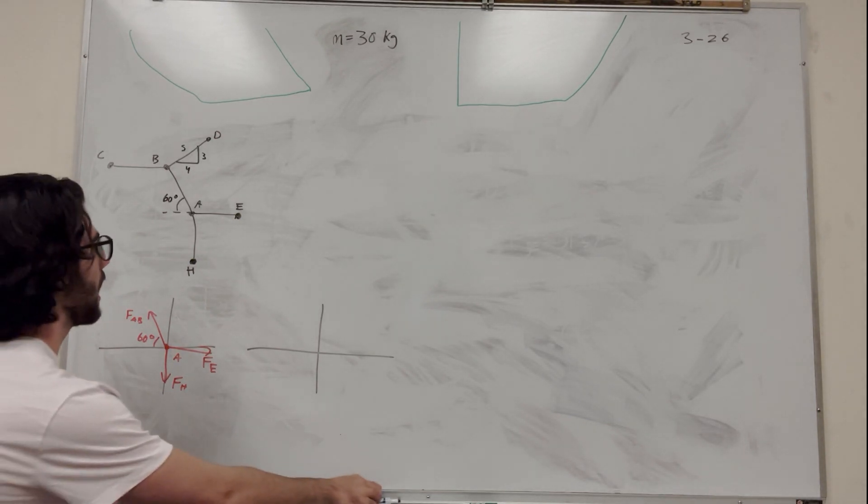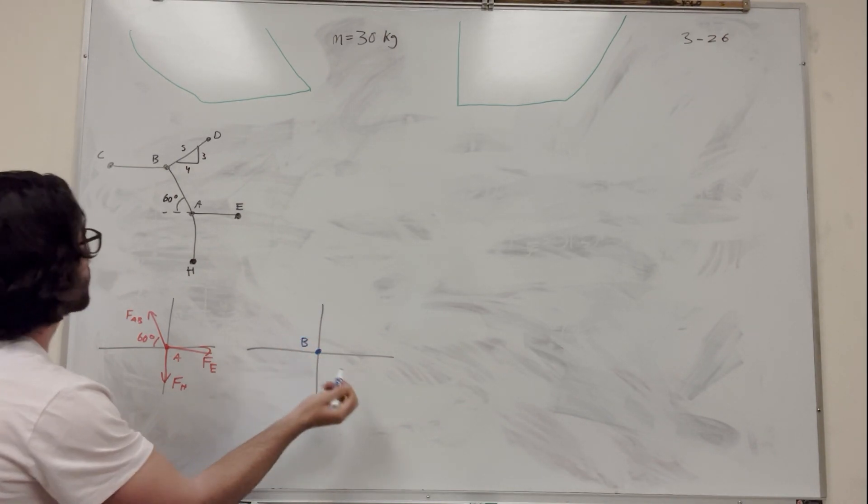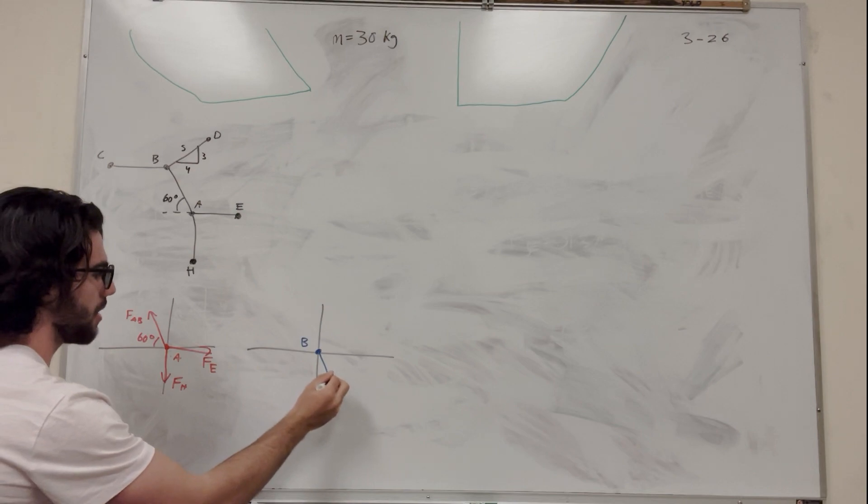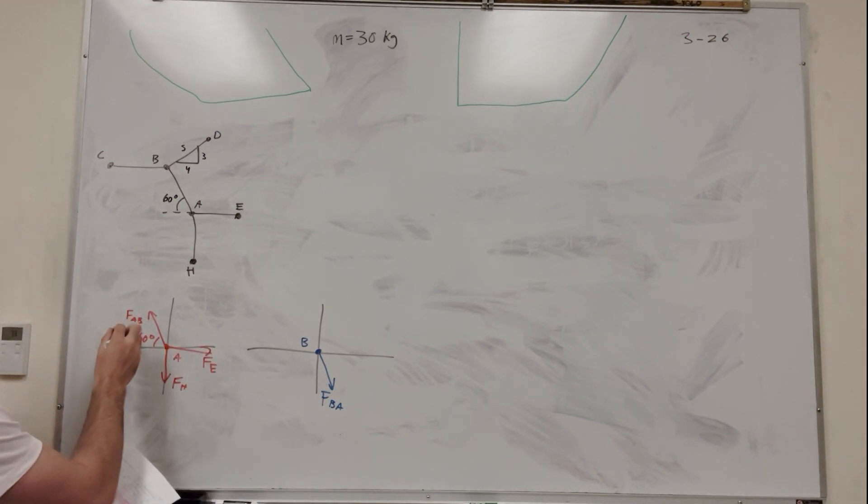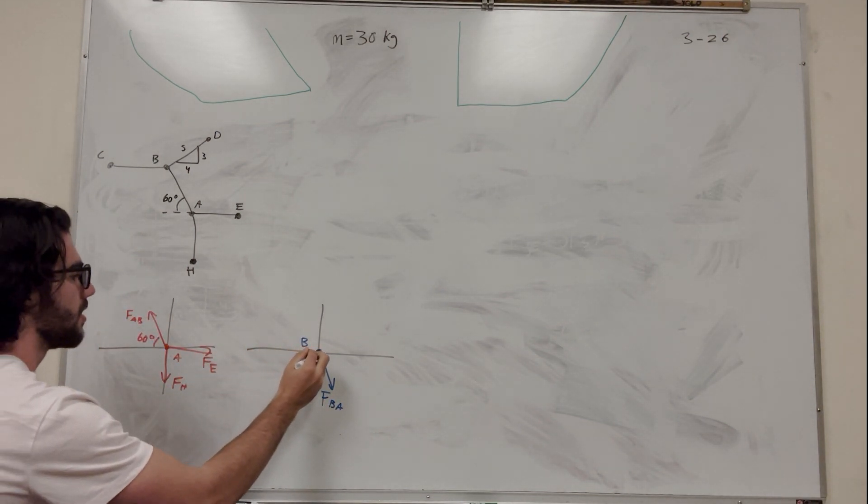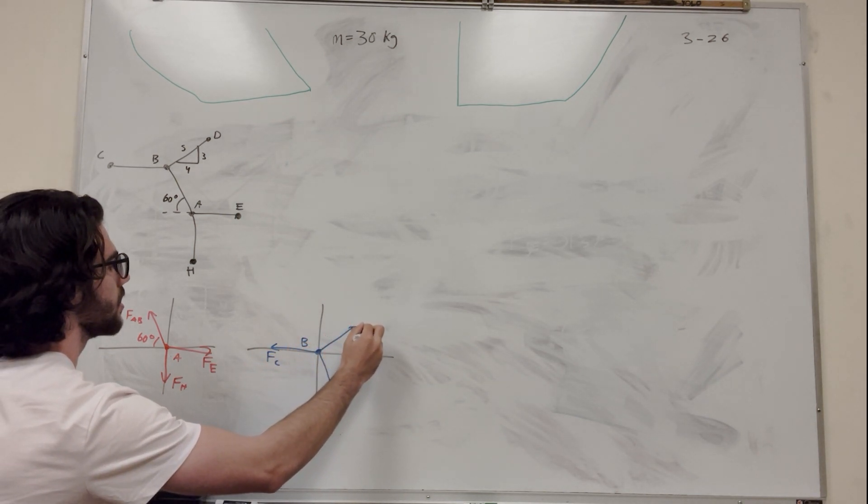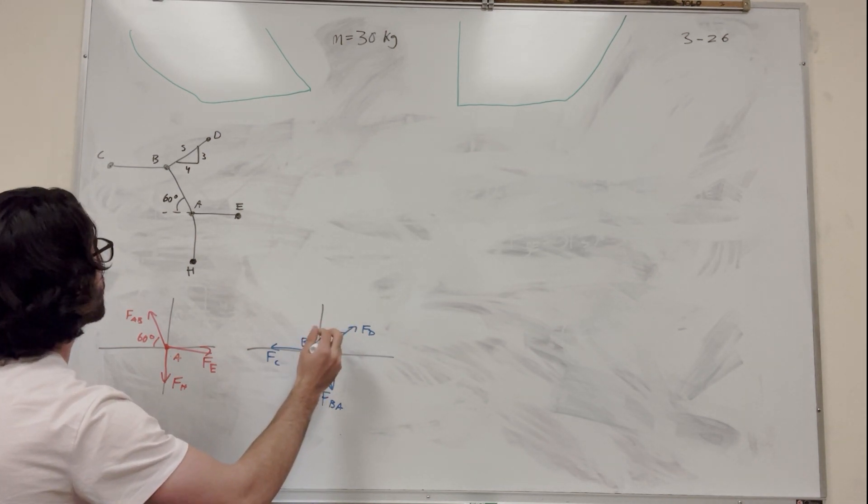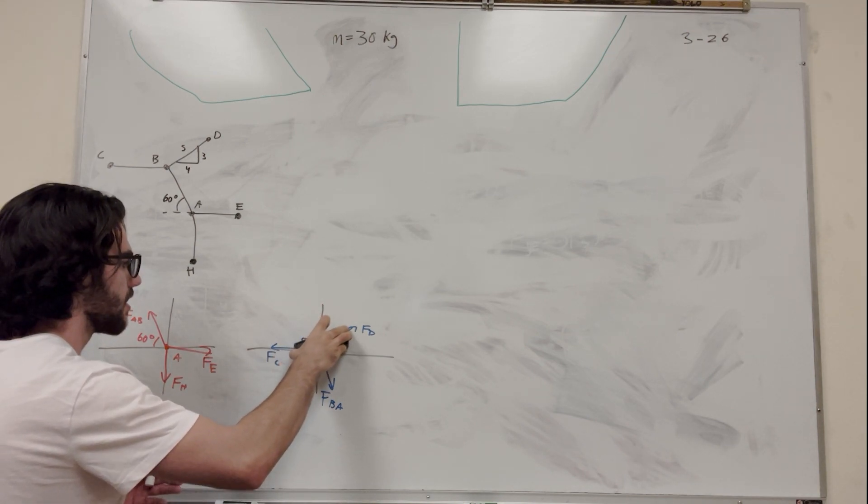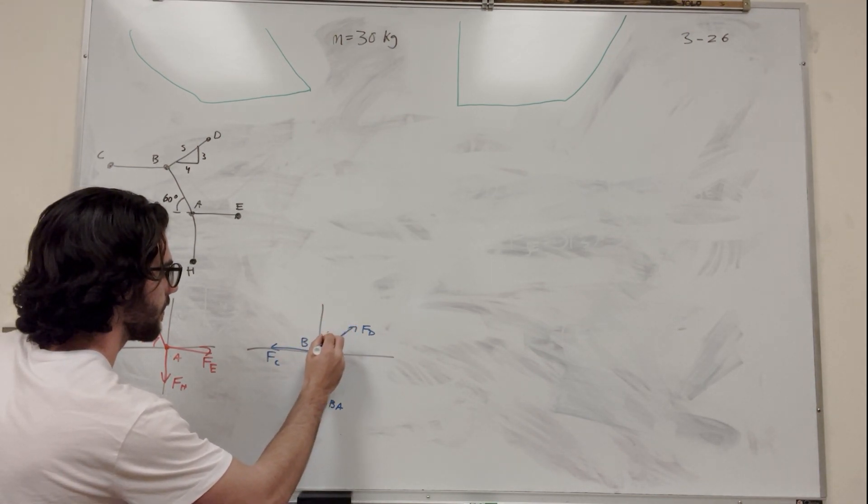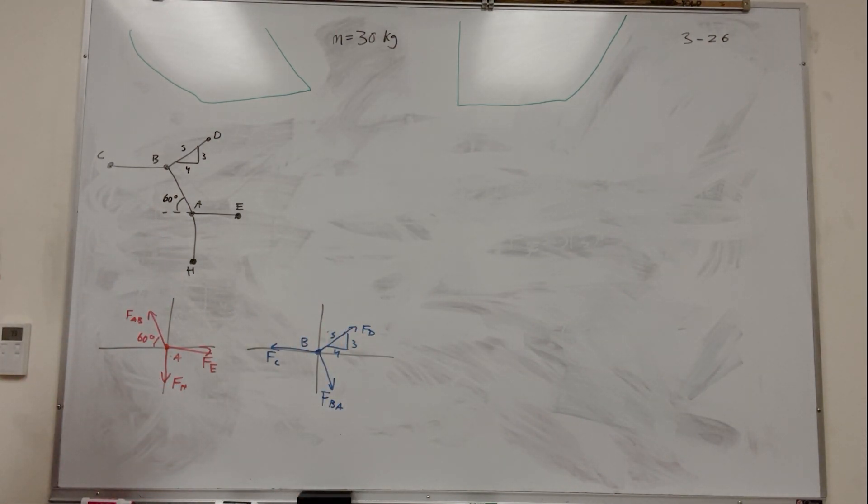So then let's do the next one. So we're at B now. We have, again, we have force AB. But this time it's force BA, so it's different but it's the same. This force is going to be equal to this force in magnitude. And this is going to be force C. And then this is going to be force D. And then this is a 4, 3, 5 triangle. Cool. So we have these two diagrams.